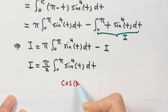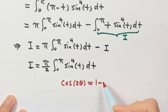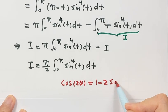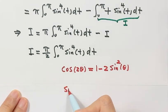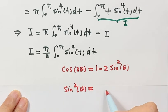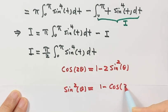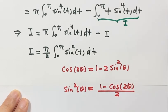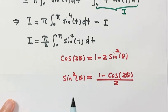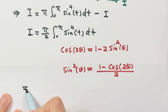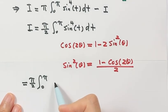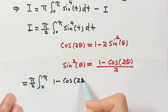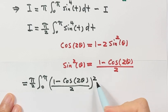We are going to use a double angle formula: cosine 2θ equals 1 minus 2 sine squared. Solving for sine squared gives us sine squared equals (1 minus cosine 2θ) over 2. Now we apply this formula to sine to the fourth, writing it as [(1 minus cosine 2t) over 2] squared, times dt.